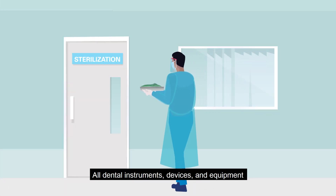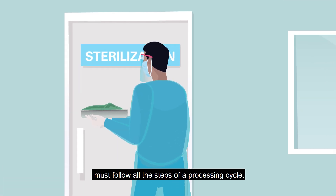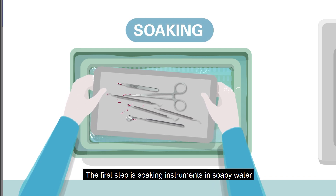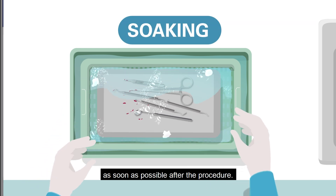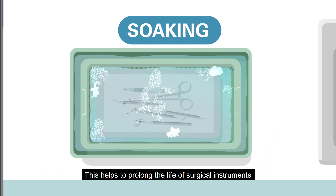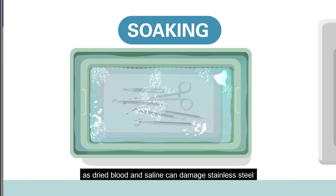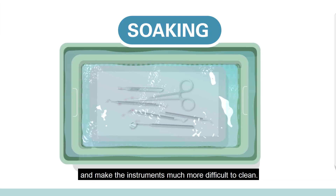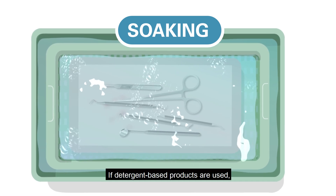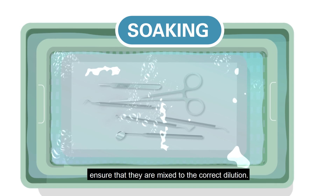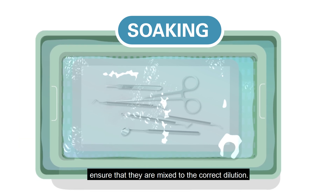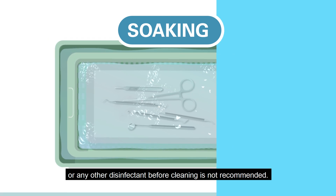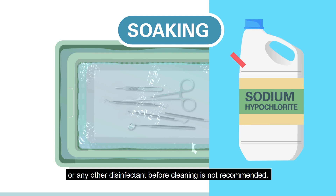All dental instruments, devices and equipment must follow all the steps of a processing cycle. The first step is soaking instruments in soapy water as soon as possible after the procedure. This helps to prolong the life of surgical instruments as dried blood and saline can damage stainless steel and make instruments much more difficult to clean. If detergent-based products are used, ensure they are mixed in the correct dilution. The soaking of instruments in 0.5% chlorine solution or any other disinfectant before cleaning is not recommended.